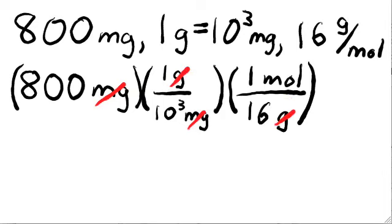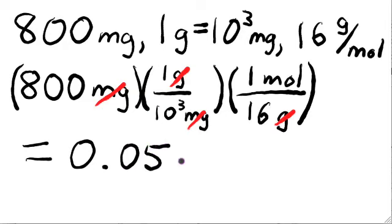After we do that, we multiply what's left, just like multiplying fractions, and get our final answer of 0.05 moles, or 1/20th of a mole of oxygen. It's a very simple procedure, and all unit conversions work this way.